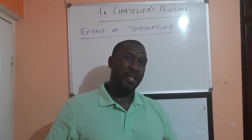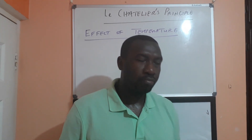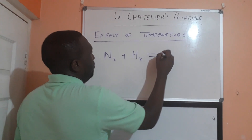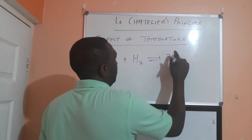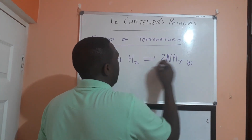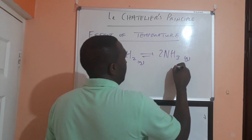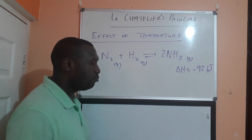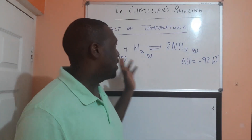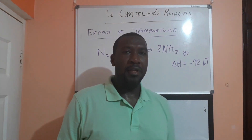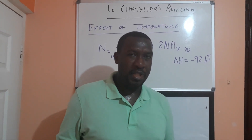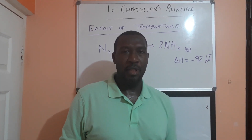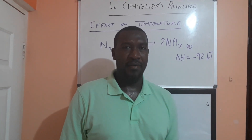on whether the reaction is exothermic or endothermic. Consider this reaction: nitrogen reacting with hydrogen to produce ammonia. The reaction is a gas phase reaction and the enthalpy change is about minus 92 kilojoules per mole. Now if the reaction is exothermic, like this one, and you increase the temperature, Le Chatelier's Principle says that the reaction that absorbs the extra heat will be favored.